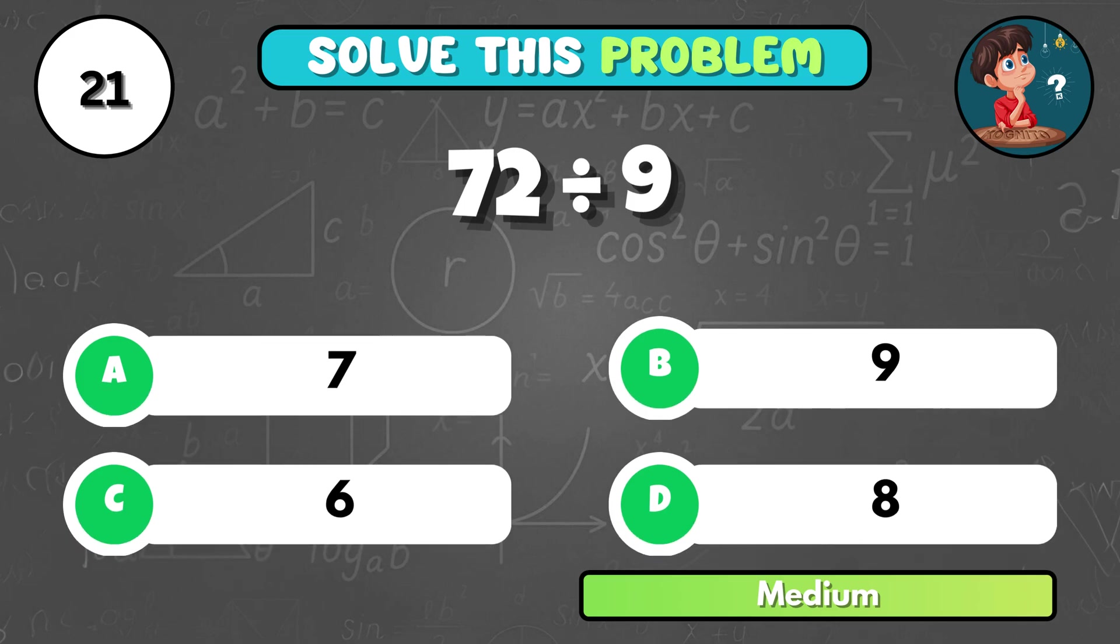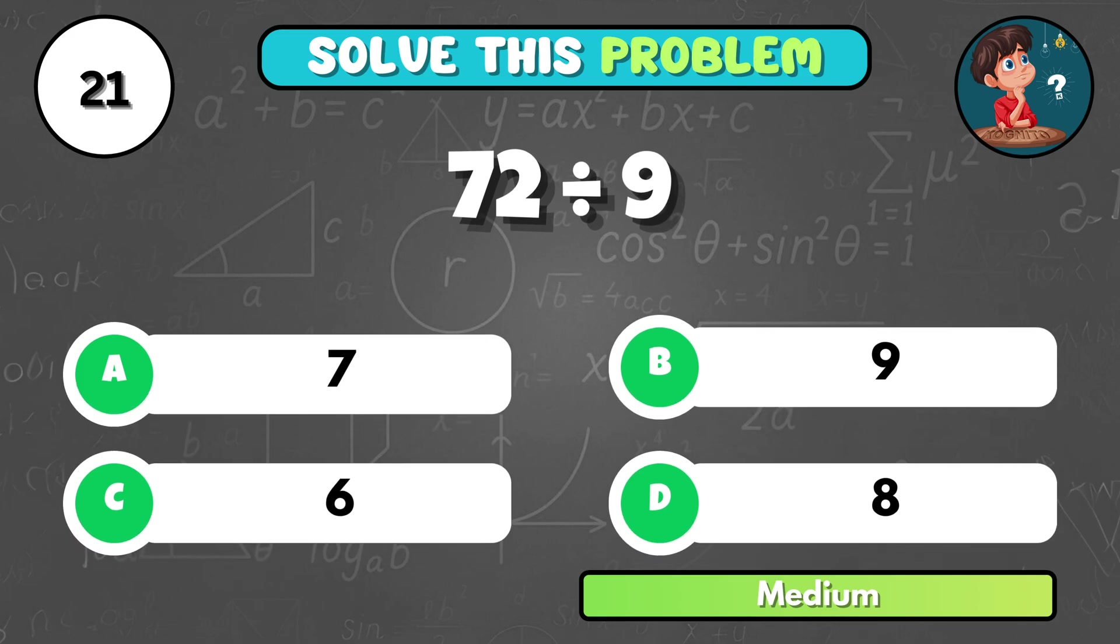What is 72 divided by 9? That equals D, 8.